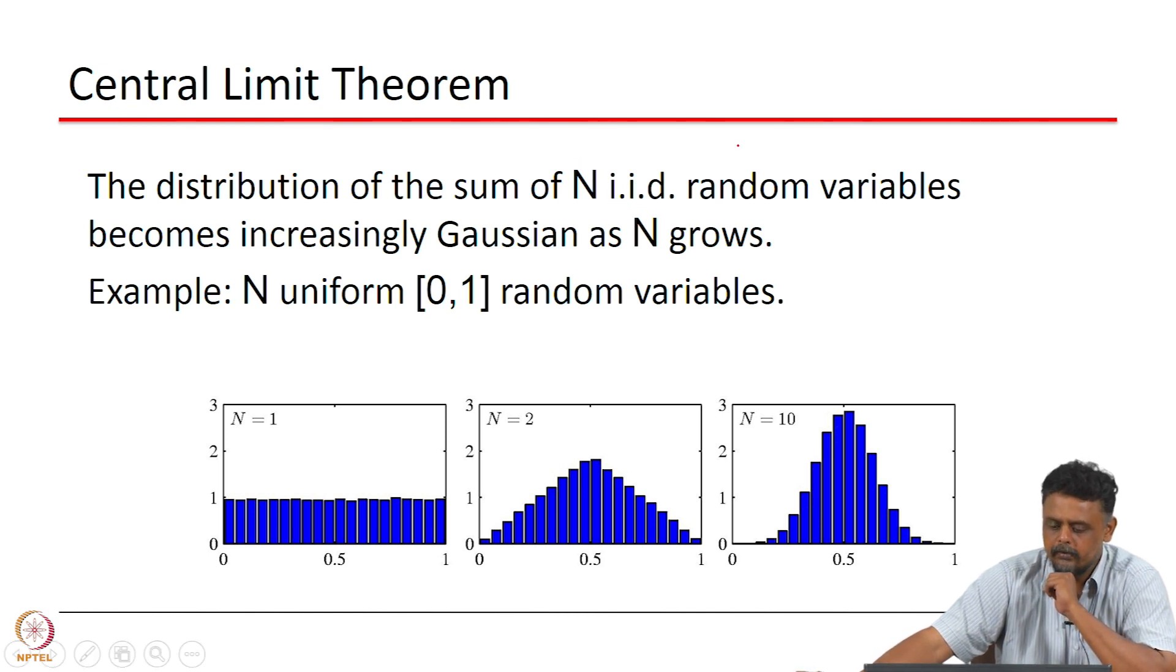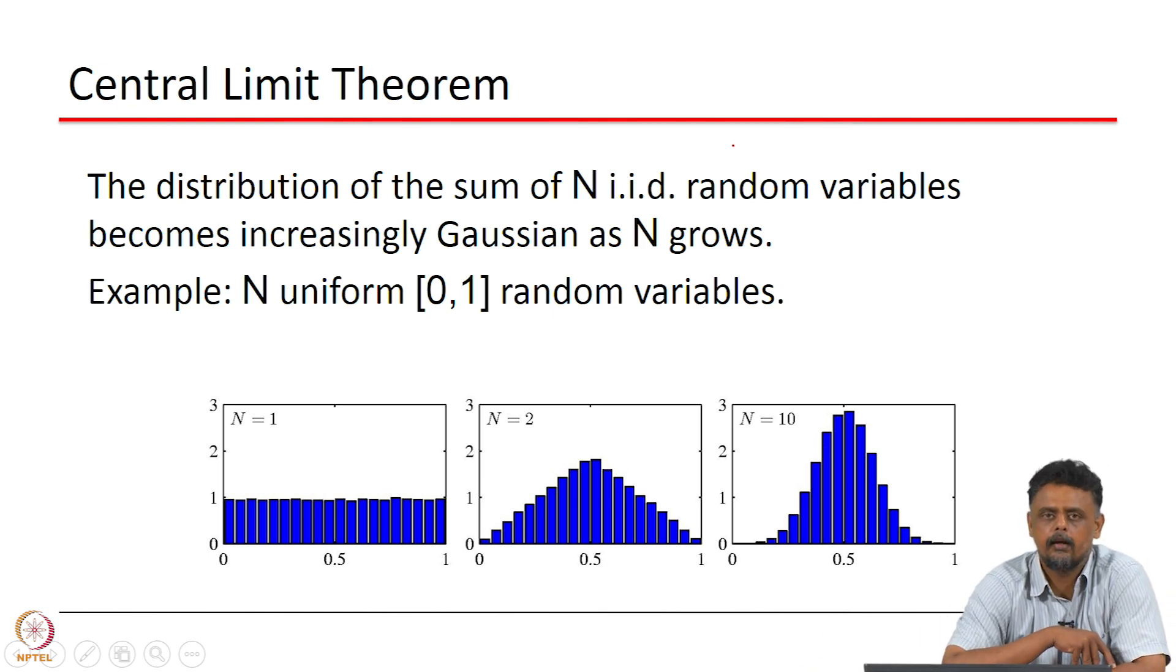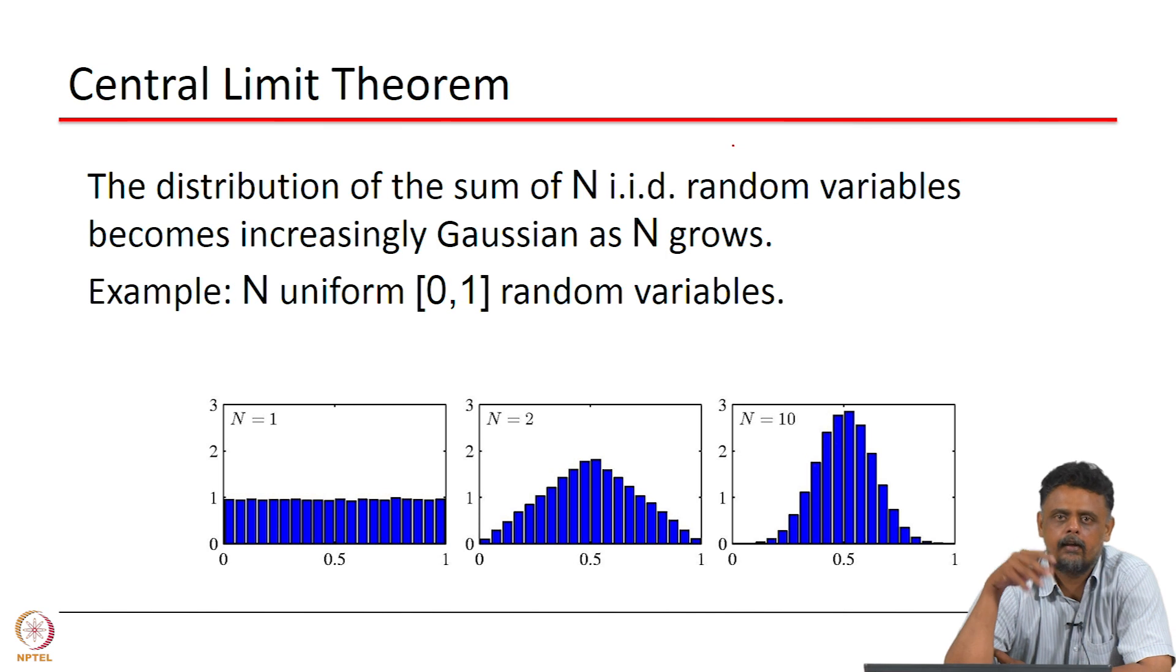So why is this important? If you look at machine learning problems where you use probabilistic models, typically people end up using the Gaussian distribution as the model. So how do we justify that? Typically justification comes from here. If you consider your data point, for instance, let's say you have a bunch of data points and you decide that they are Gaussian distributed.